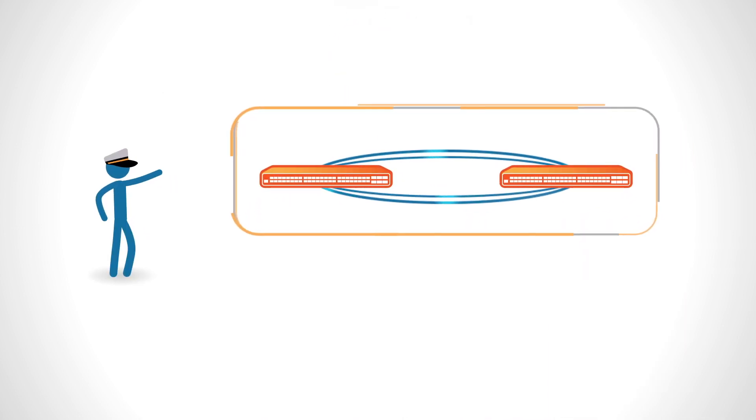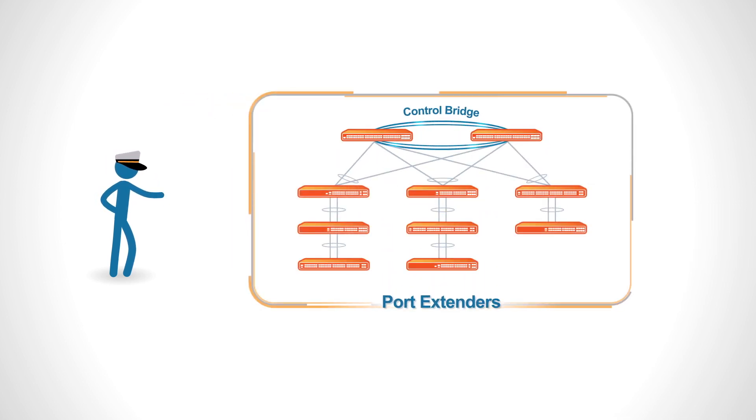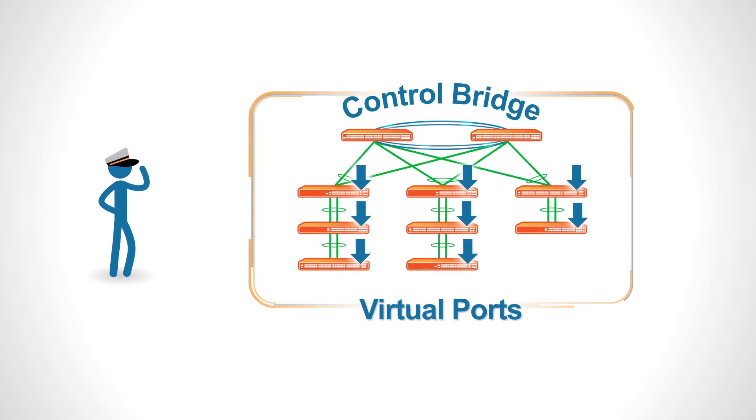This single logical domain consists of a control bridge and access switches we call port extenders, because every port in the fabric becomes a virtual port extending from the control bridge.